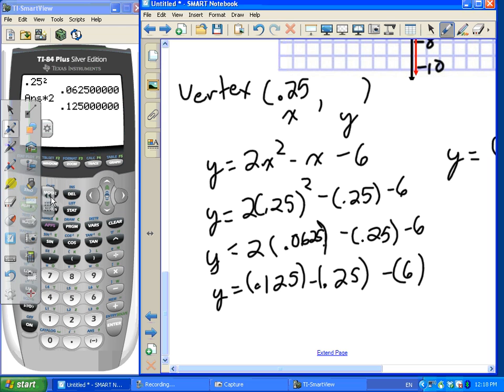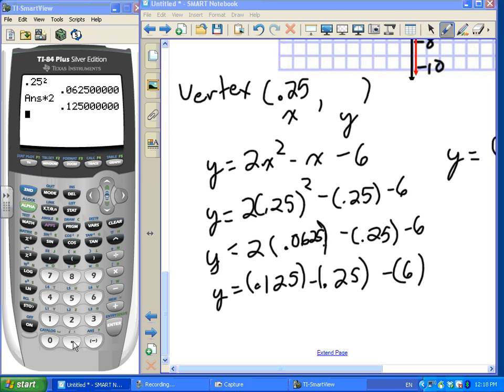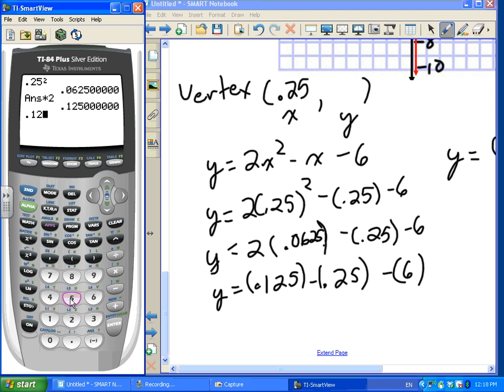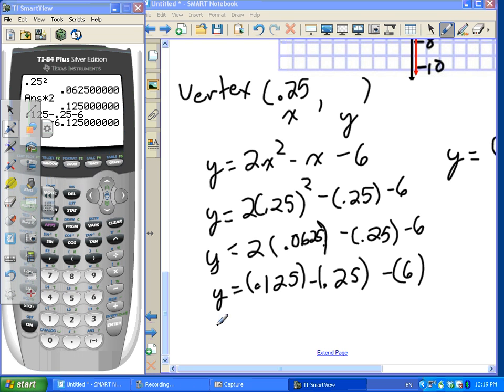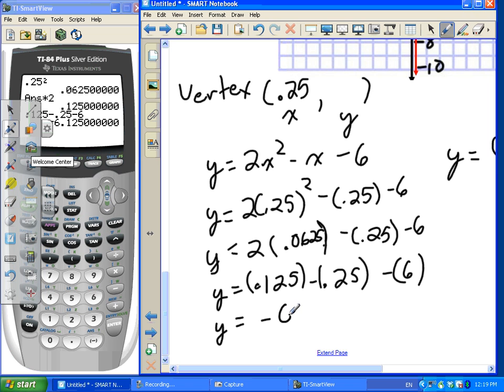I'm going to do that all in one line on the calculator. So that is 0.125 subtract 0.25 subtract 6. Equal to negative 6.125. That's nice. Y equals negative 6.125. So according to this, that is our y-intercept.